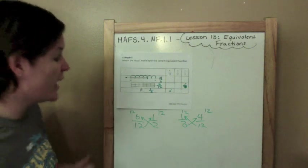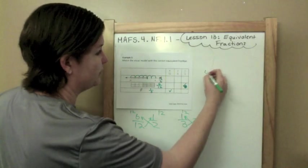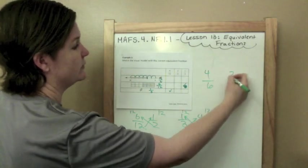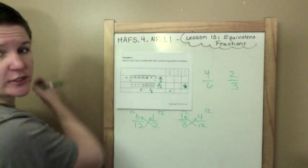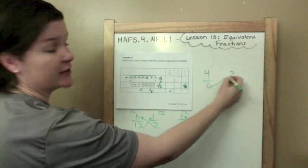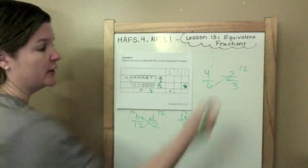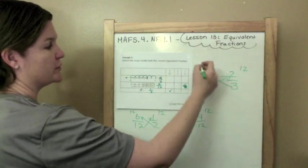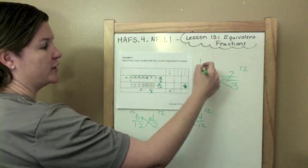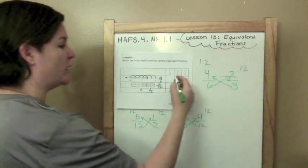Now work it out. Let's see if 4 sixths is equivalent to 2 thirds. 6 times 2 is 12, 3 times 4 is 12. Is 12 equal to 12? Yes, it is. Put a check there.